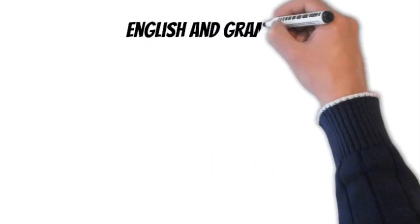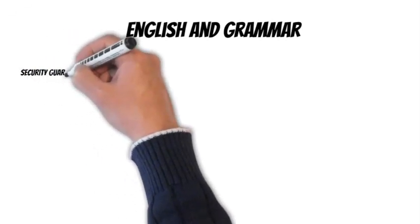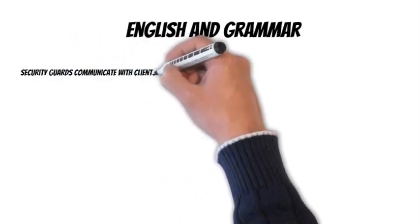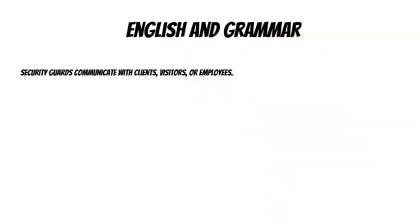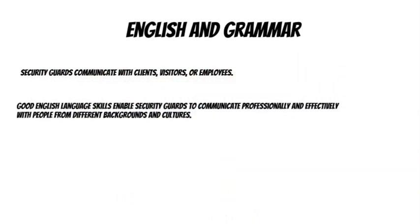English and grammar - why English and grammar is important. Security guards communicate with clients, visitors, or employees verbally and in writing. They need to communicate effectively using appropriate language and tone to provide clear instructions, answer questions, and report any incidents or suspicious activities.